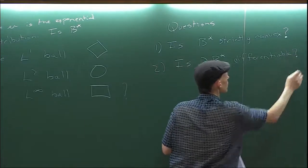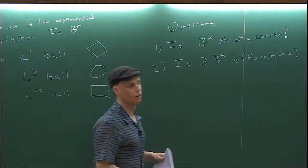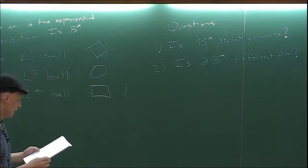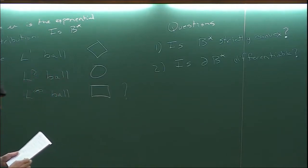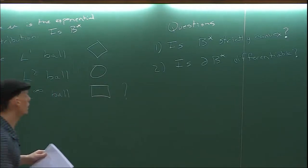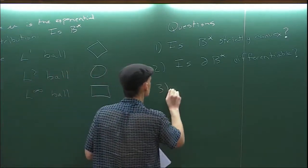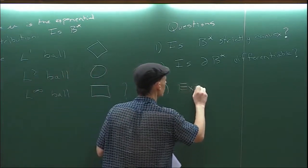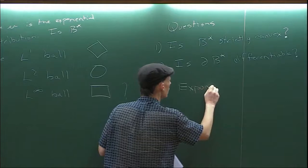But if you have a continuous distribution, there's no continuous distribution known where B* is strictly convex. Whether the boundary is differentiable is also unknown — these are two big open questions.